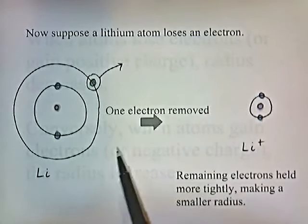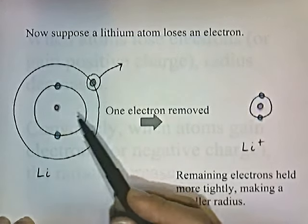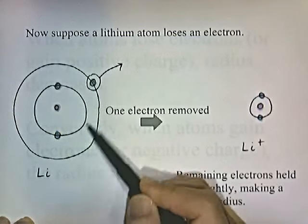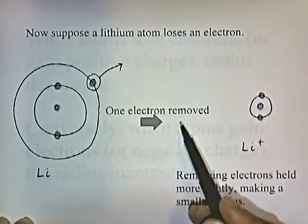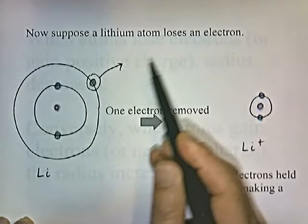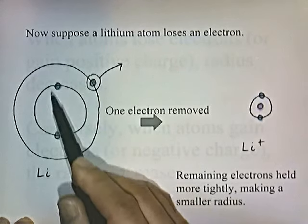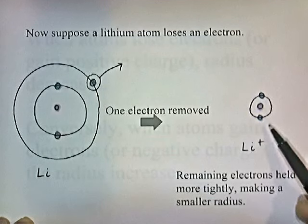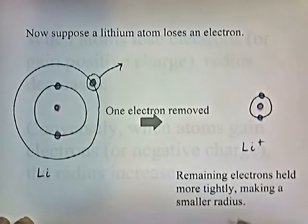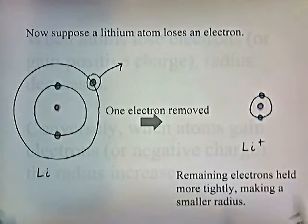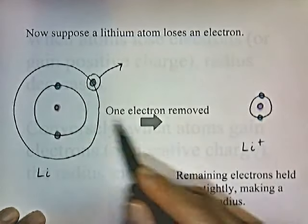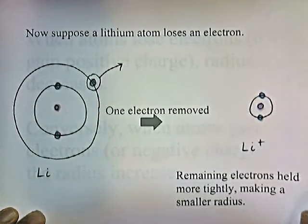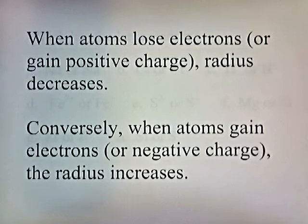Instead of dogs and a man, let's suppose we have a lithium atom that loses an electron. Here's the nucleus of lithium and here are the electrons — the nucleus is trying to pull the electrons close. Then one electron is removed. The lithium is now holding on to two electrons instead of three. Since the remaining electrons are held more tightly, this makes a smaller radius. Easier to pull fewer electrons towards yourself than more. So as you remove electrons, the remaining electrons move closer to the nucleus — atoms that lose electrons or gain a positive charge have a smaller radius, and conversely, when atoms gain electrons or a negative charge, the radius increases.